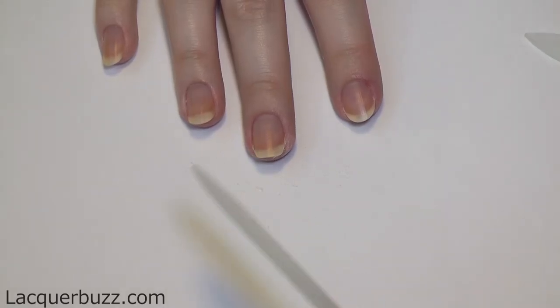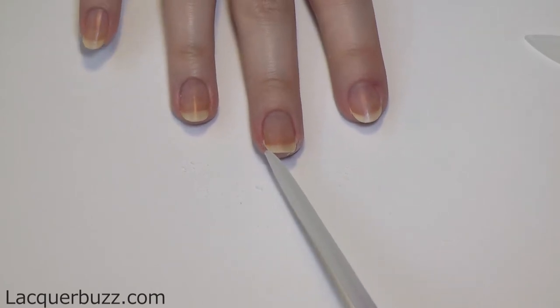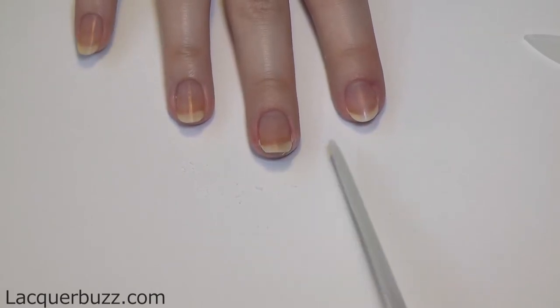The final step will transform the nail from this sort of a squoval shape we have here to a nice rounded shape.